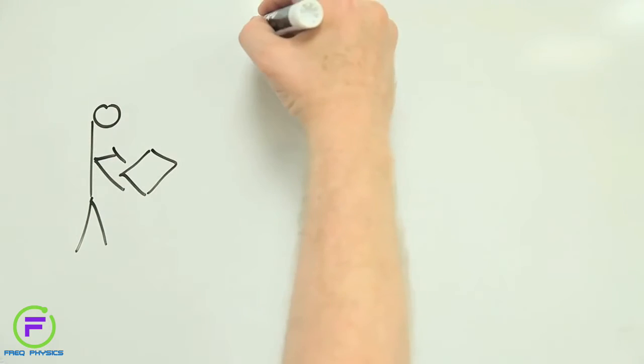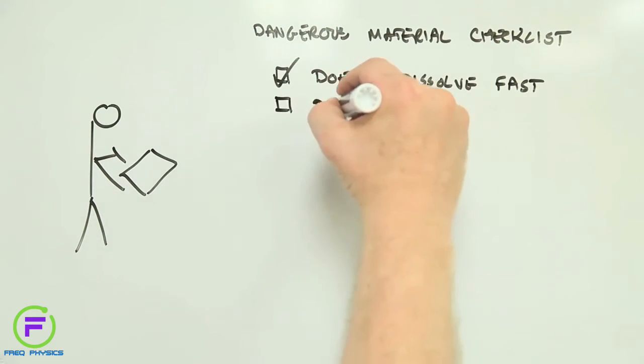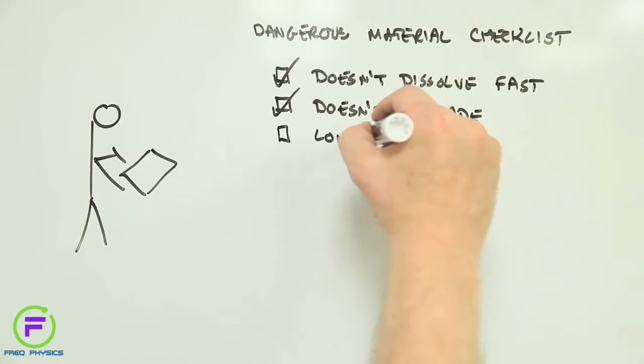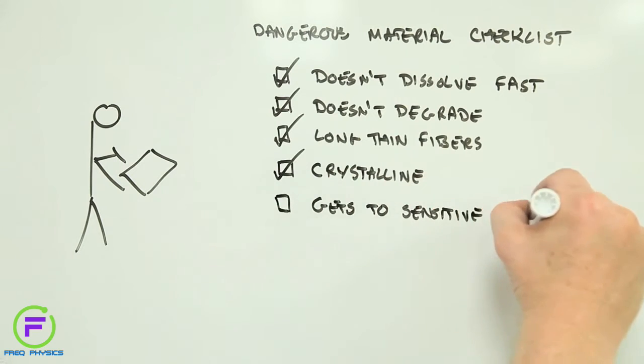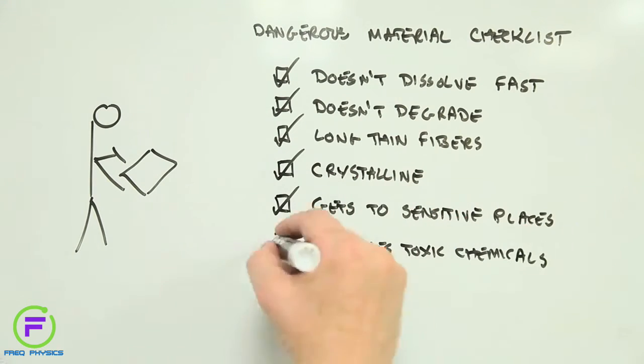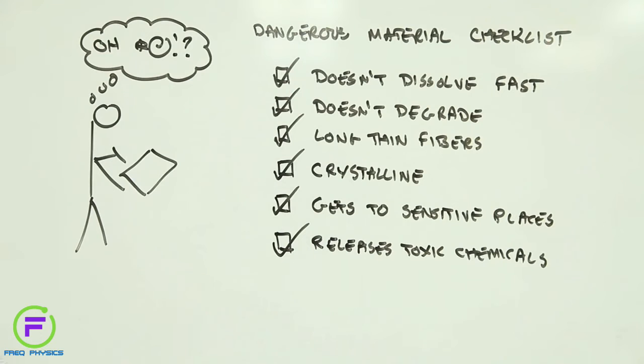But there are some warning signs we've learned to look out for in materials that our bodies don't handle so well. Particles that get into us and don't dissolve or degrade easily aren't great news. Neither are particles that are long and thin, like fibres, or crystalline, or small enough to slip into places they shouldn't, or materials that release known toxic chemicals. These are all characteristics that scream watch out if they're present in a brand new, never before tested advanced material.